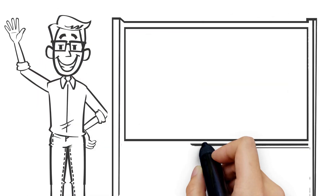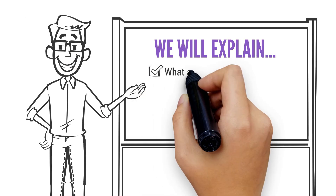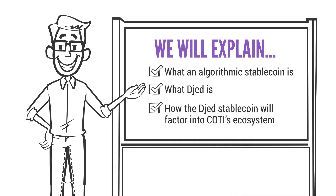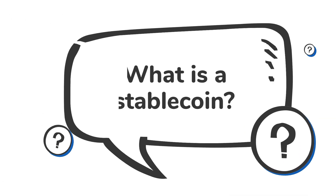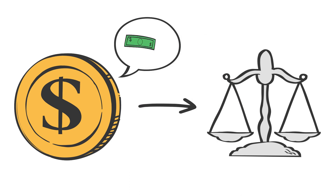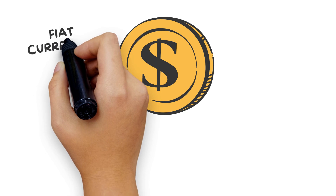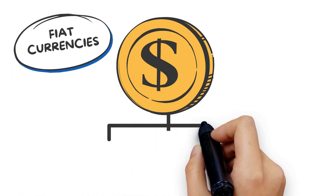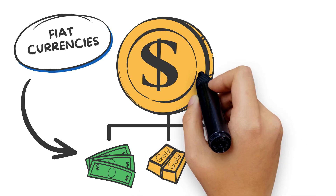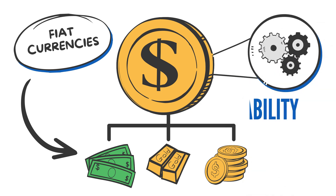In this video we will explain what an algorithmic stablecoin is, what JED is, and how the JED stablecoin will factor into Cody's ecosystem. First, what is a stablecoin? A stablecoin is a type of cryptocurrency that has a mechanism to stabilize its own price while being pegged to another asset's value. Most commonly, stablecoins are used to represent the value of fiat currencies such as the US dollar, but their value can also be linked to precious metals, stocks, or other cryptocurrencies.